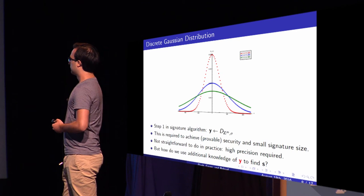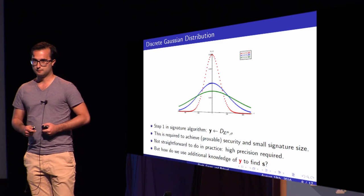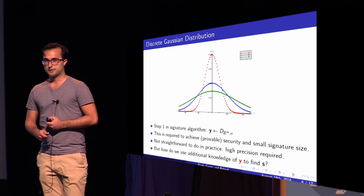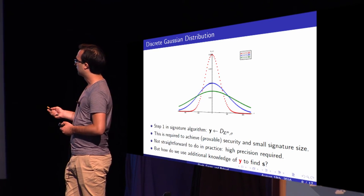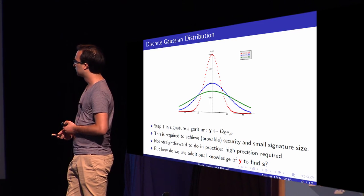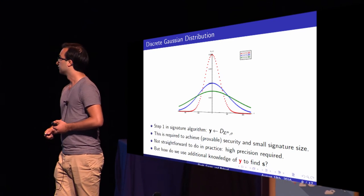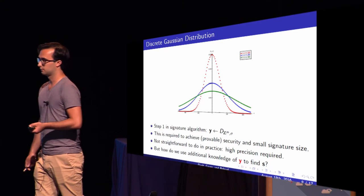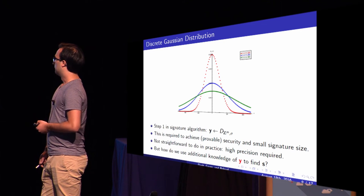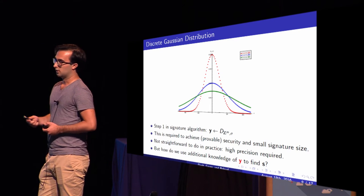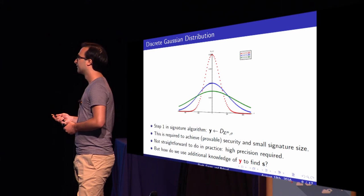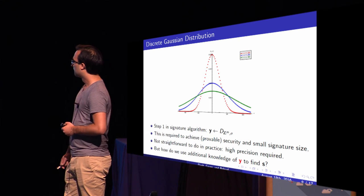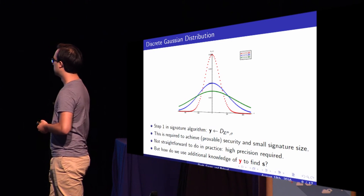Why do we use a discrete Gaussian distribution? It's used to achieve both provable security and the smallest signature size possible. It's actually not straightforward to sample from this distribution in practice — it looks like the normal Gaussian distribution but is only defined over the integers. Simply sampling a normal Gaussian and rounding to the integer gives a slightly different distribution, which makes the proofs not hold anymore. This makes it a good target for a side-channel attack, because it's also not known yet whether this can be done in constant time.